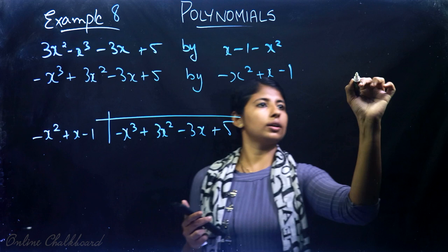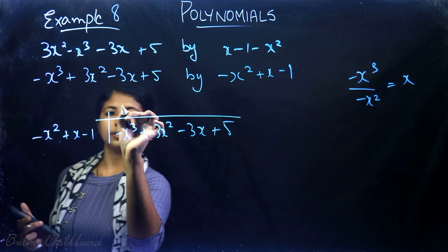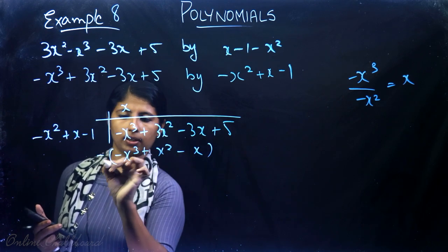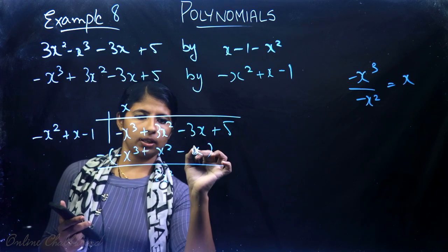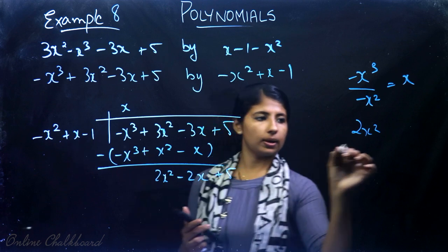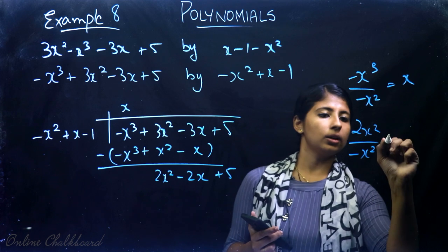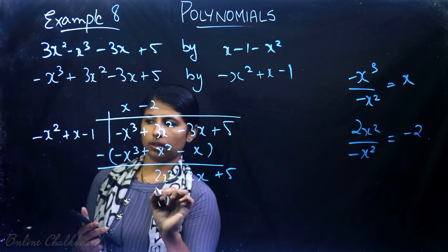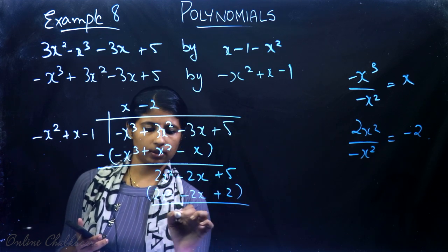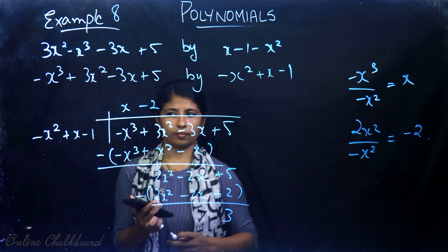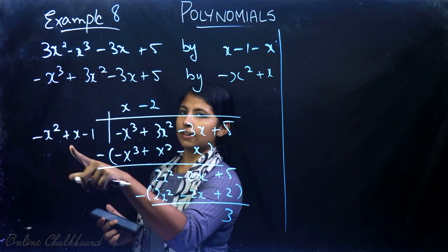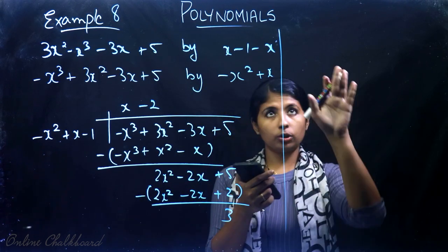Now divide 2x² by −x² to get −2. Multiply −2 by (−x² + x − 1) to get 2x² − 2x + 2. Subtracting gives remainder 3. The degree of 3 is 0, which is less than the degree of the divisor (degree 2), so we stop. The quotient is x − 2 and remainder is 3.